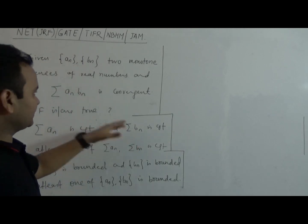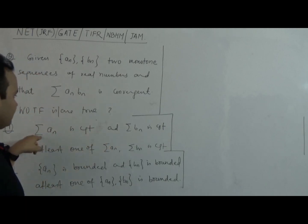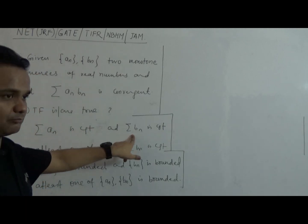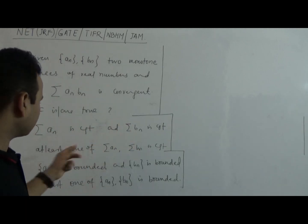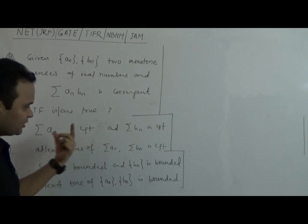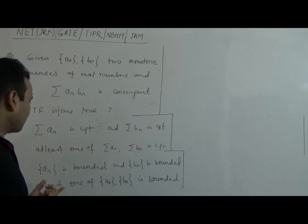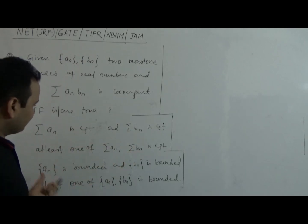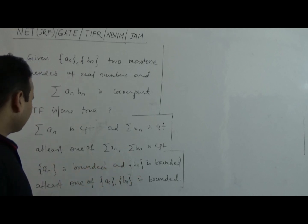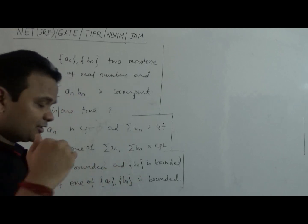The four options are: (A) Does this imply that the series of A_n and the series of B_n are both convergent? (B) At least one of them is convergent? (C) Both sequences are bounded? (D) At least one of them is bounded?